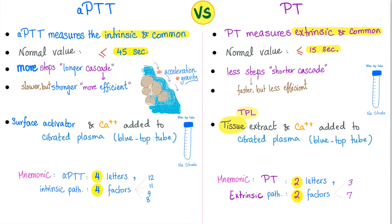How do we perform the tests in the lab? For PTT: get the patient's plasma, add surface activator and calcium — calcium is removed with sodium citrate, which means the blue top test tube. For PT: get tissue extract (because we need tissue factor), add calcium to citrate plasma — again the blue top tube.